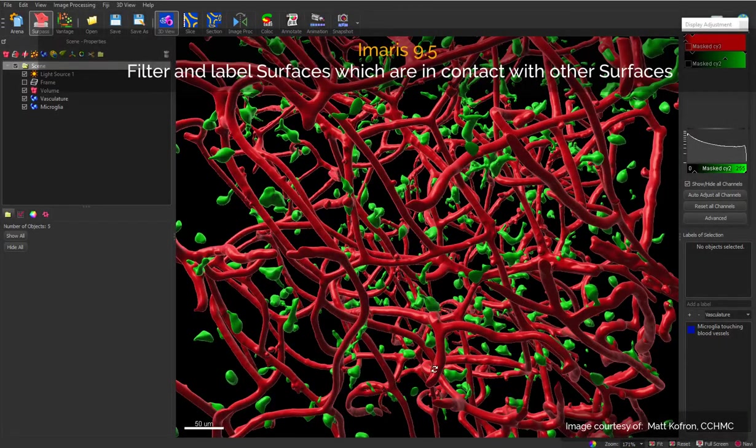In this short movie I will show you how to filter, label and display only microglia which are touching blood vessels. I have two surface objects on the list. I call them microglia and vasculature.